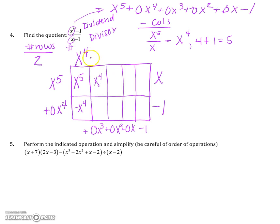Continue your process. x times what gives me x to the 4th? That's x to the 3rd. Finish it out. So I got negative x cubed. I want 0x cubed. So this box up here must be a positive x cubed. Again, because these two boxes must add to this number down here, 0x cubed.